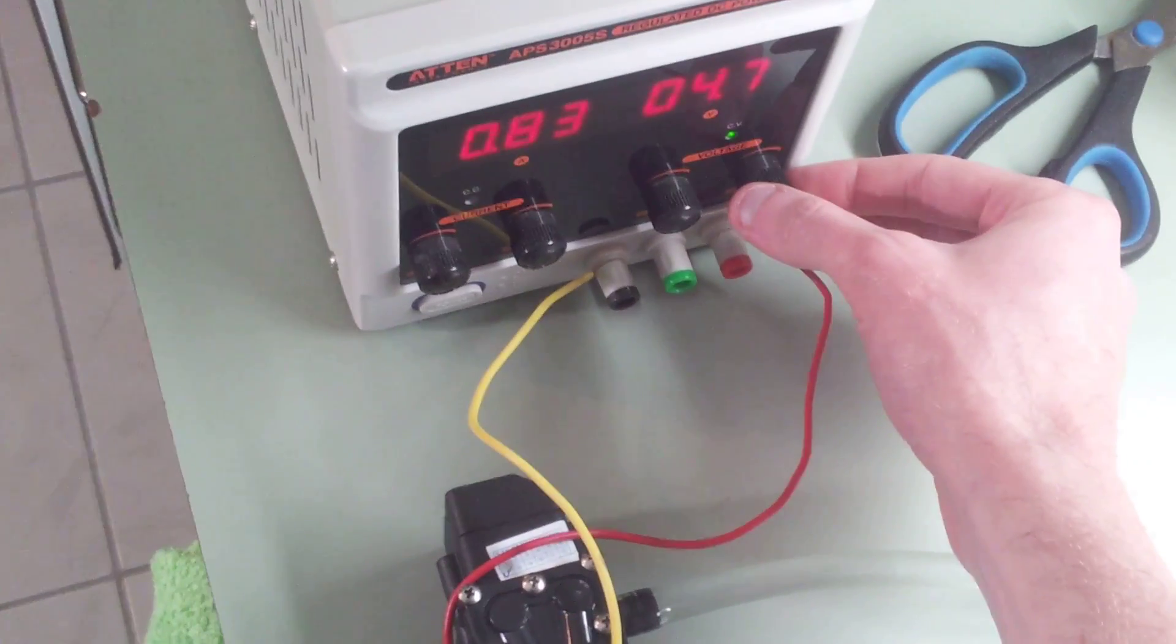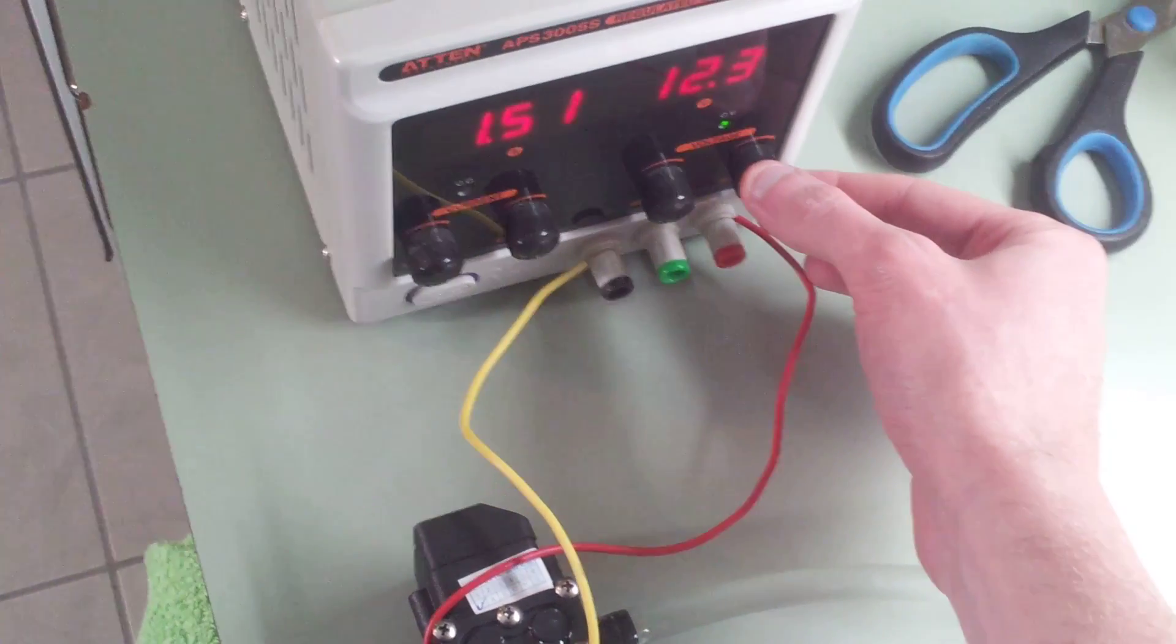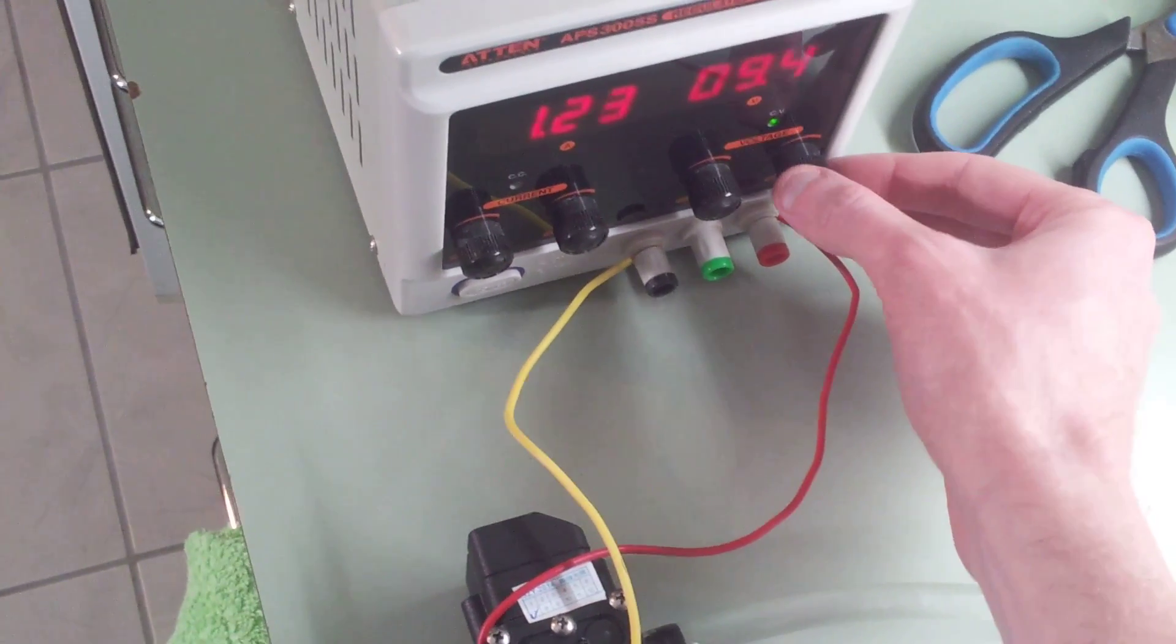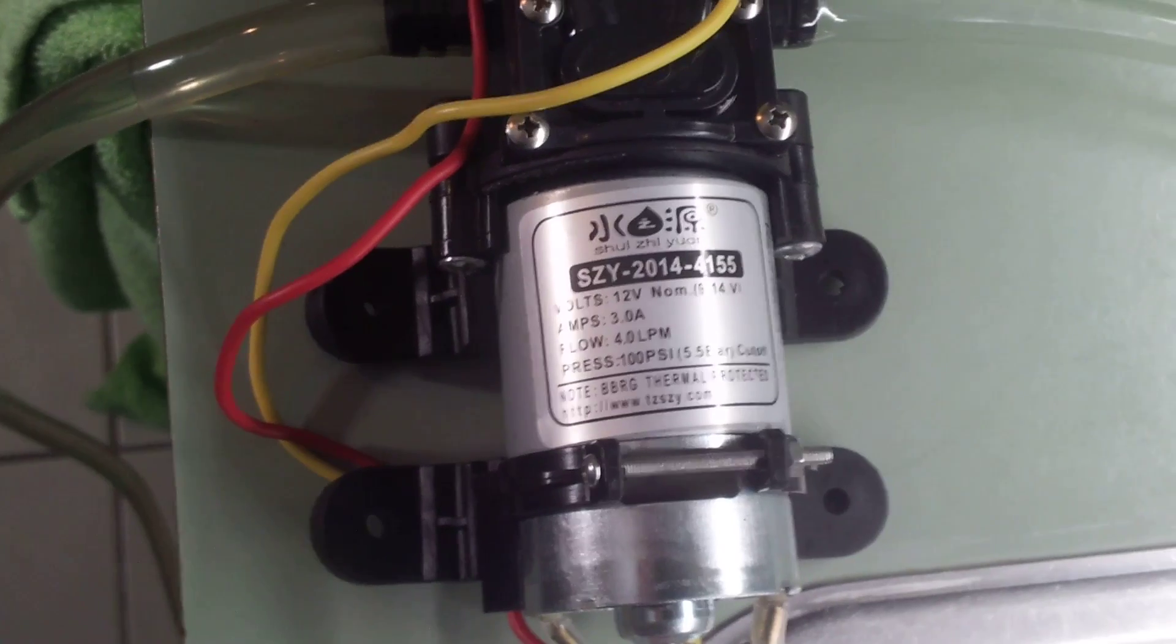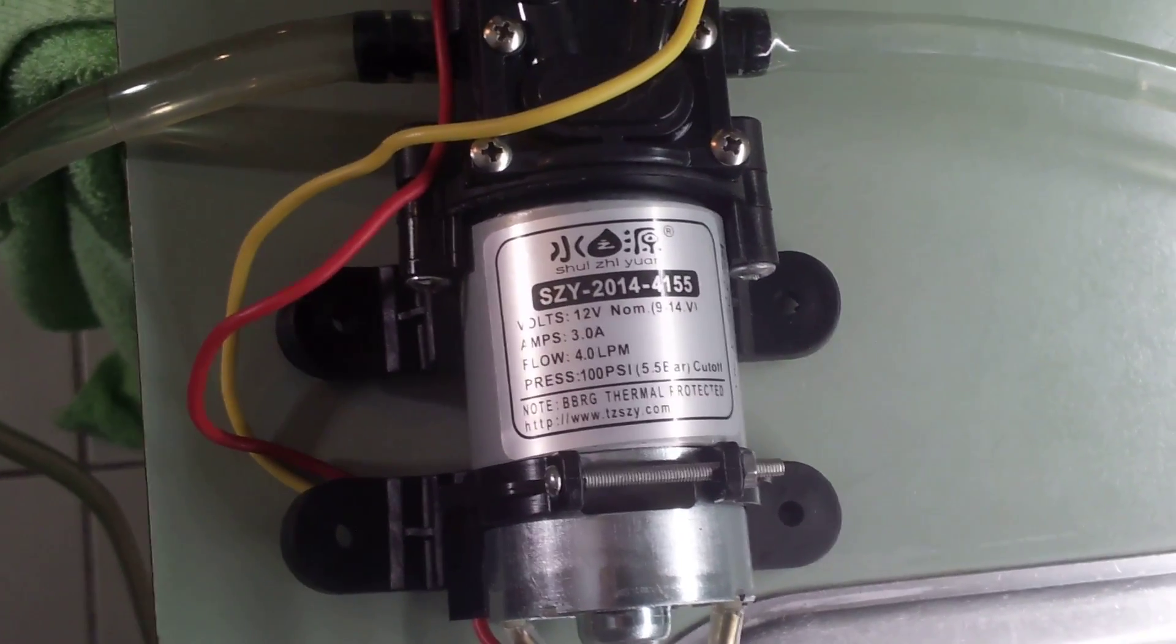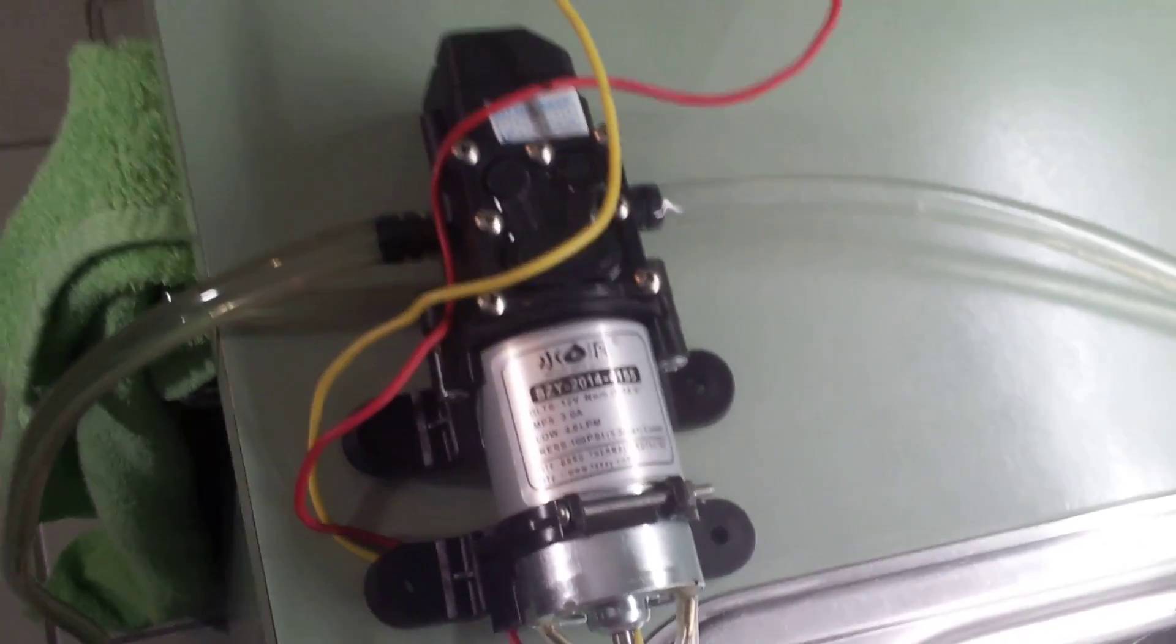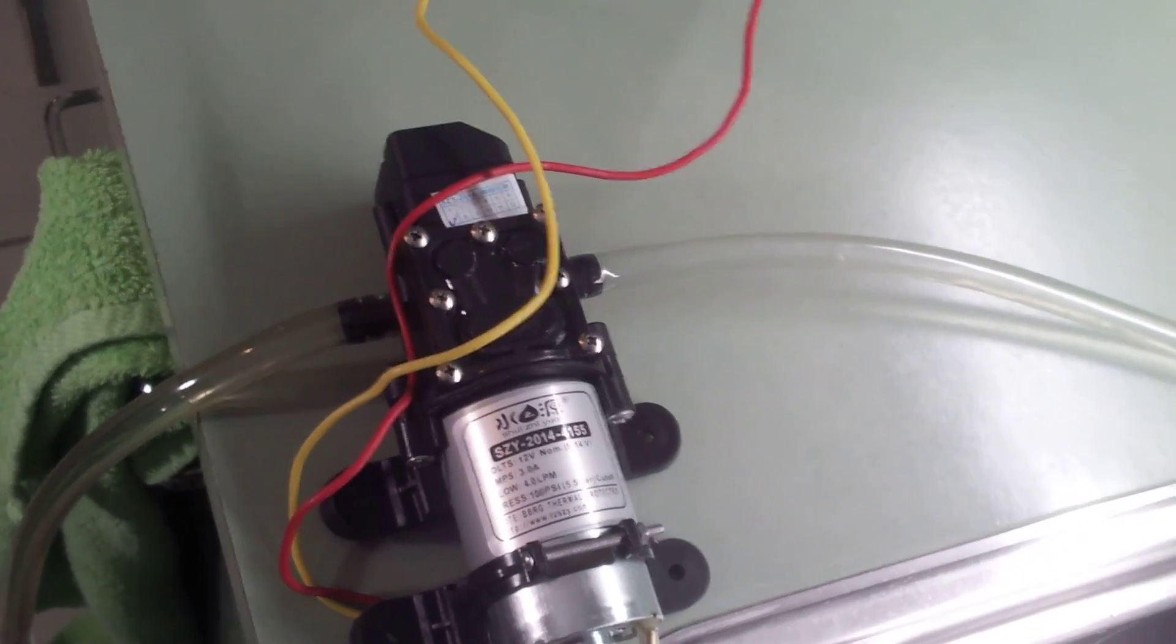Now if we turn this up to 12 volts, you can see that it only uses about 1.5 amps which is half of what it's supposedly rated for. It's rated up to 3 amps on the label. But Chinese products I'm always a bit skeptical of labels and ratings. So if I do come across a pressure gauge that goes up to that 100 psi mark, I definitely would like to hook it up to this just to see what it can do.